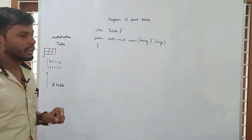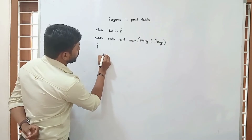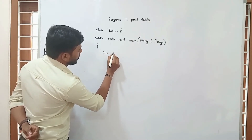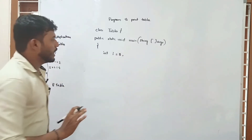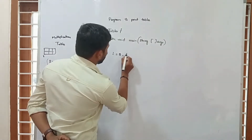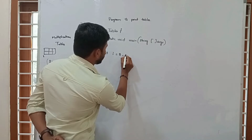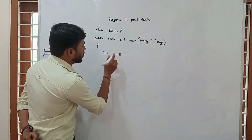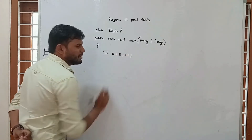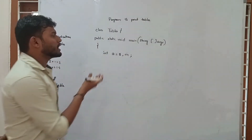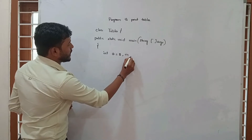I need the 8 tables. So first I am declaring the data type int. I am declaring a variable 'a' and assigning it a value. I also need a variable 'm', which is a temporary variable — I need that variable for computation. And I am also declaring 'i'.